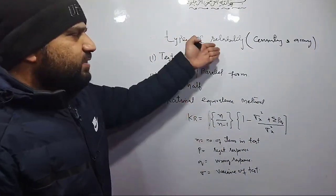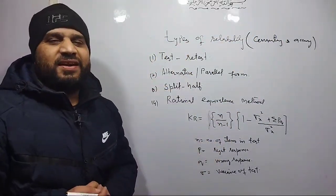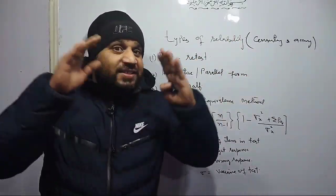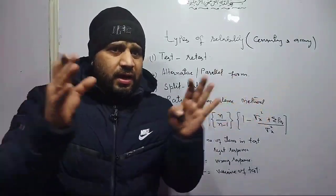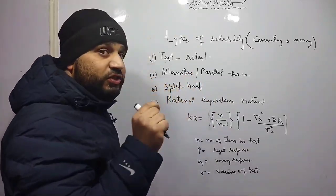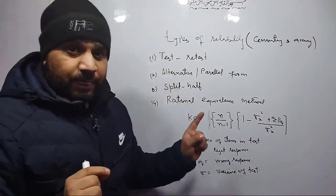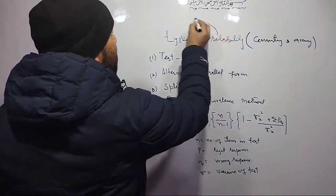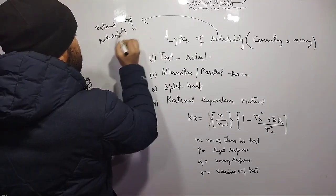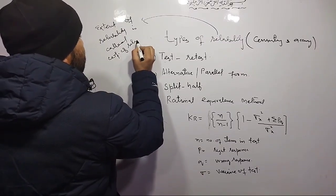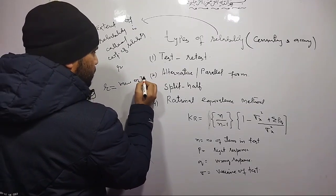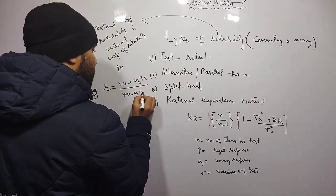So reliability means consistency and accuracy — that is very simple. Now there is another term related to reliability, that is coefficient of reliability. If a test is consistent, how consistent is it? The extent of consistency — if it is accurate, how accurate? So to measure the extent of reliability, there is coefficient of reliability. It is the extent of reliability, sometimes called stability, and it is denoted by r.